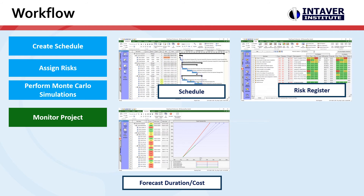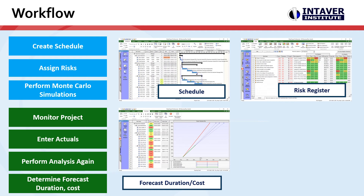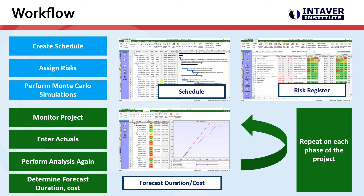Once we're underway, we'll monitor the project and enter the actuals — which can be done in a third-party tool like Microsoft Project or in RISQ Project — and then perform the analysis again. From that, we determine forecast duration and cost, and the estimate at completion taking into account the actuals. This is an ongoing process at every phase gate or project review: monitor, enter actuals, and perform the risk analysis again at each phase.